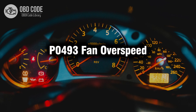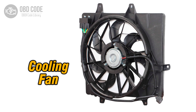Welcome. In this video we will talk about code P0493, its symptoms, causes and possible solutions. The P0493 trouble code indicates that the electric cooling fan is running at a speed higher than expected. The electric cooling fan helps regulate the temperature of the engine and prevent overheating by drawing air through the radiator when the vehicle is stationary or moving at low speeds.